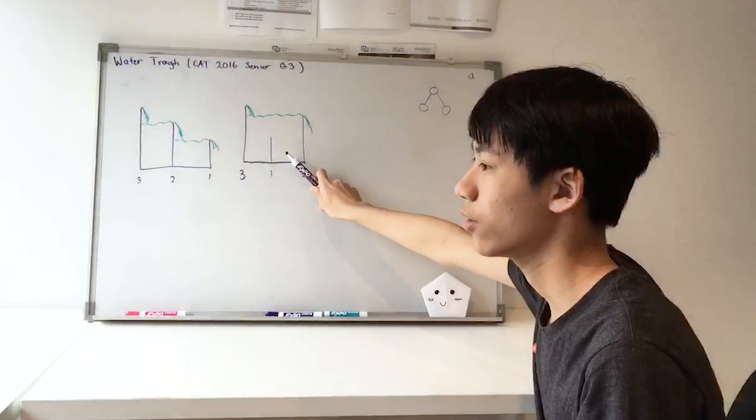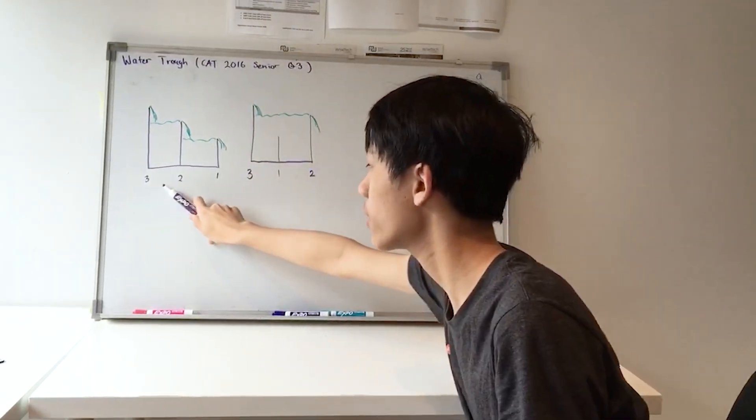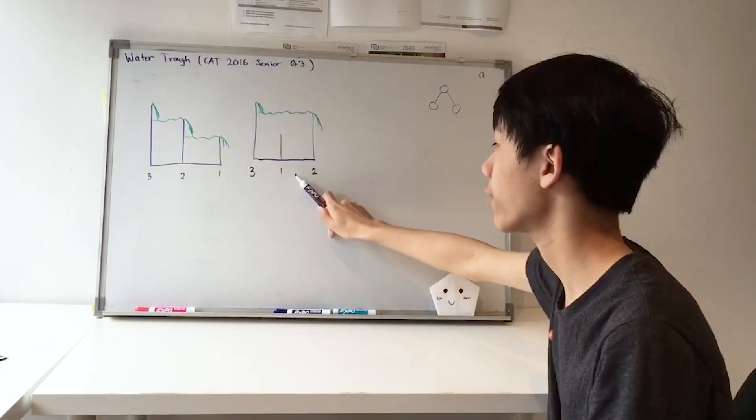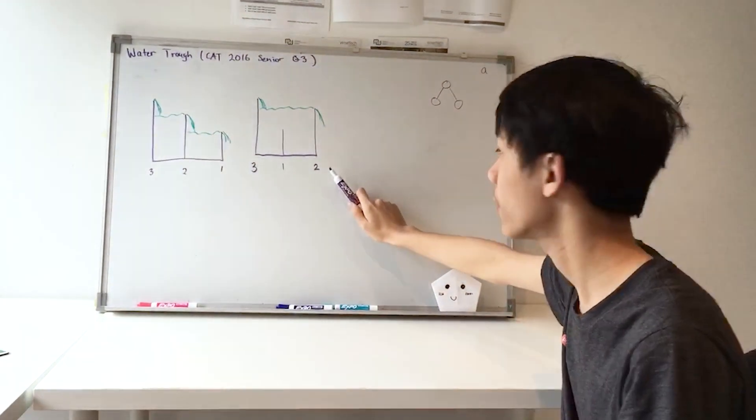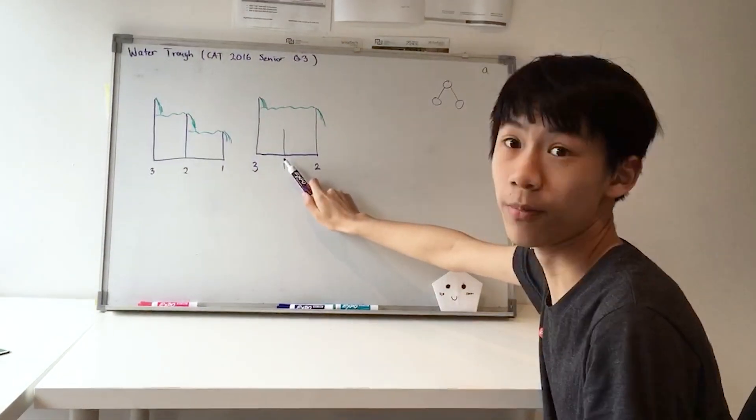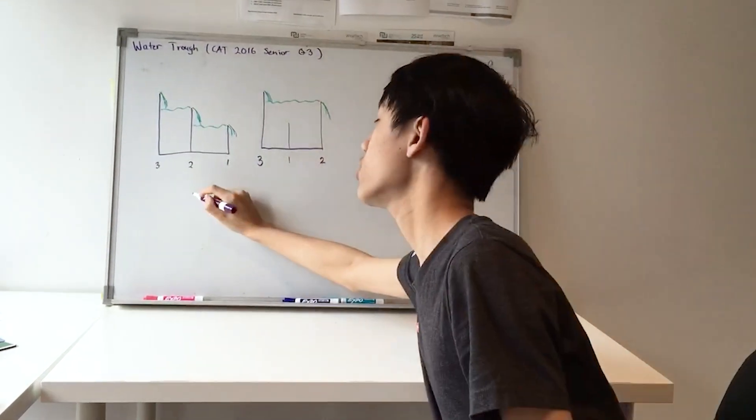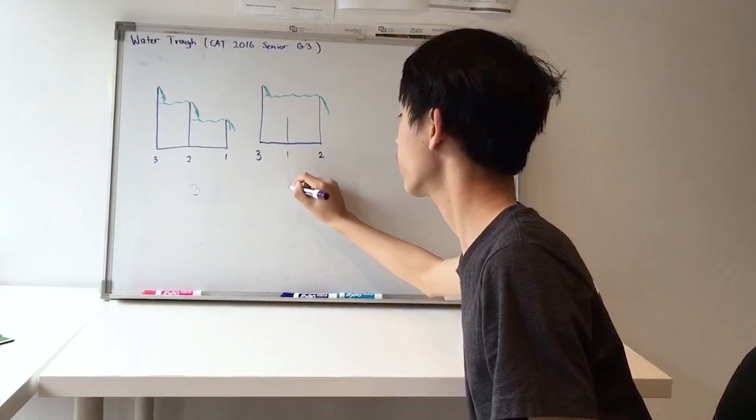In these diagrams, the first trough has baffles of height 3, 2 and 1 metres, whilst the second trough has baffles of height 3, 1 and 2 metres. These baffles are spaced 1 metre apart and the trough is 1 metre wide, so the first trough holds 3 cubic metres while the second trough holds 4 cubic metres.